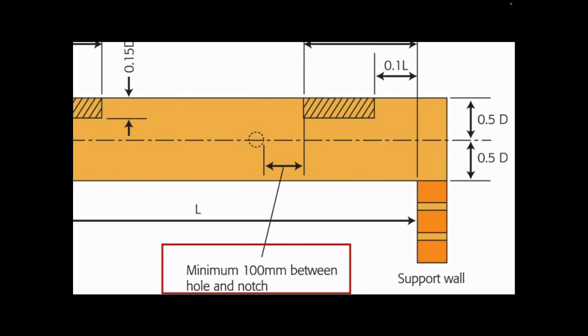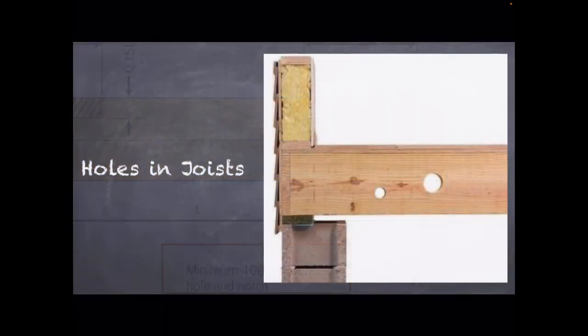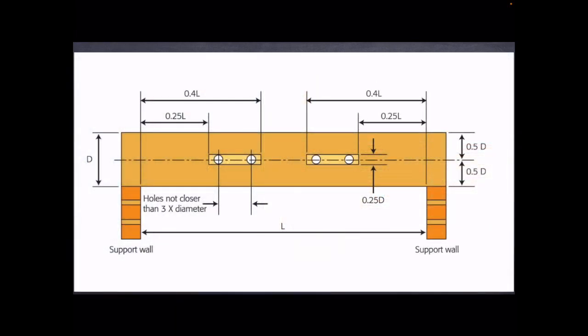Remember there is a minimum of 100 millimeters between any hole and any notch. Now we'll move on to holes. There are always two drawings because it's difficult to combine both ideas in one — they'll be in your book. Holes work on the same principle as notches: you still refer to length and depth. You can't start a hole any closer to the edge than 0.25 — which is a quarter — of the length, and you can't place it any further than 0.4, or four tenths, of the length.